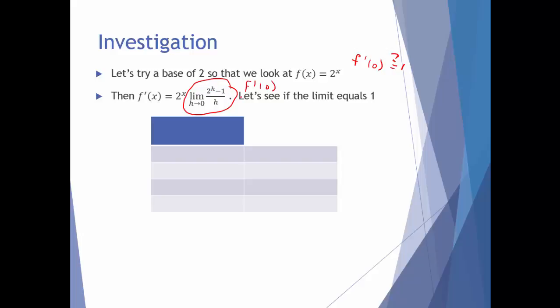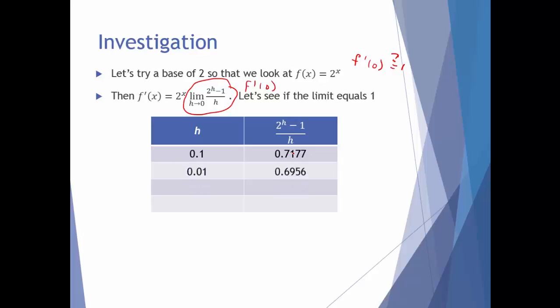Starting with h = 0.1, we get 0.7177. Moving closer to 0, h = 0.01 gives 0.6956. For h = 0.001, I get 0.6934. And for h = 0.0001, I get 0.6932.